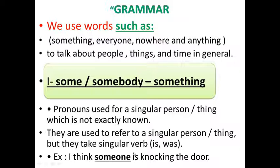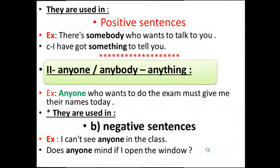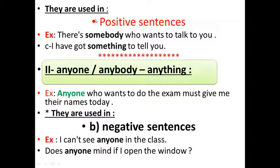I think someone is knocking the door. Note: after 'someone', we use 'is' — this is a singular verb. They are used in positive sentences. For example: There is somebody who wants to talk to you. Note: we add 'is' to the verb, which means this is a singular noun. I have got something to tell you.